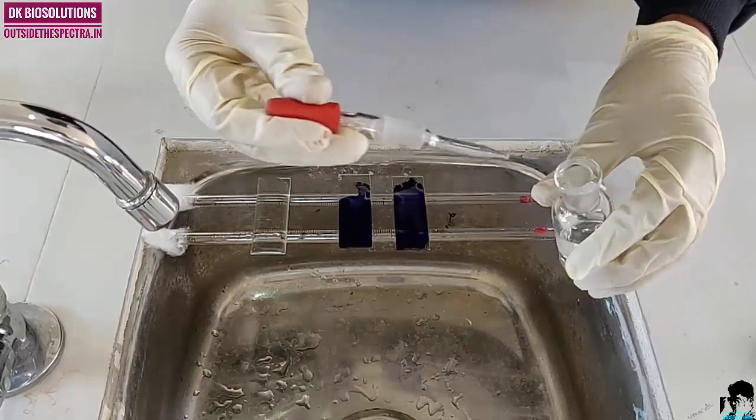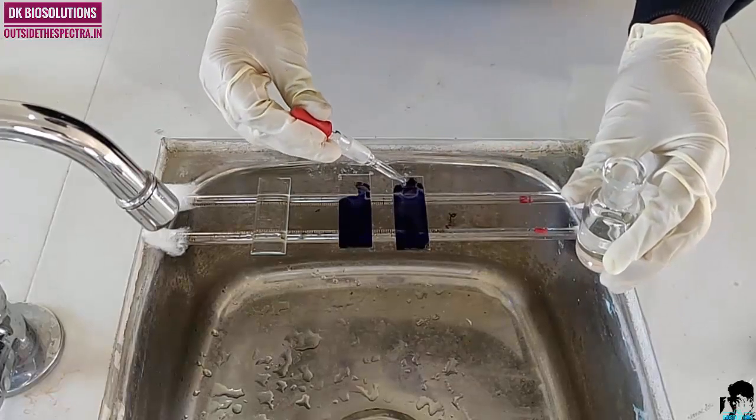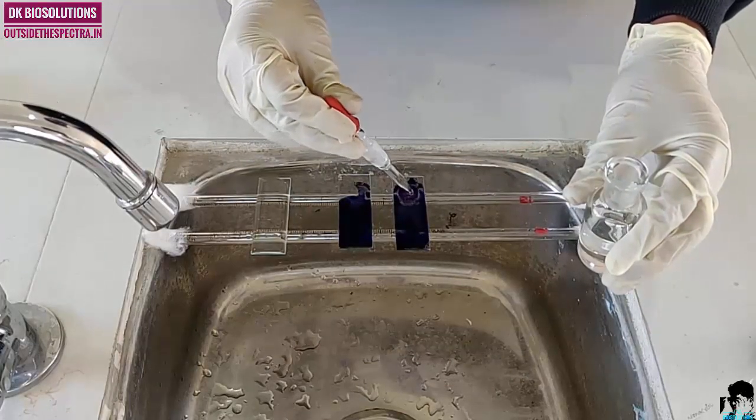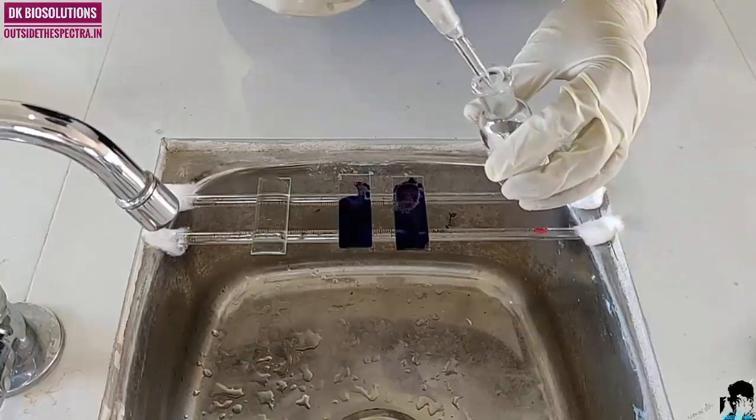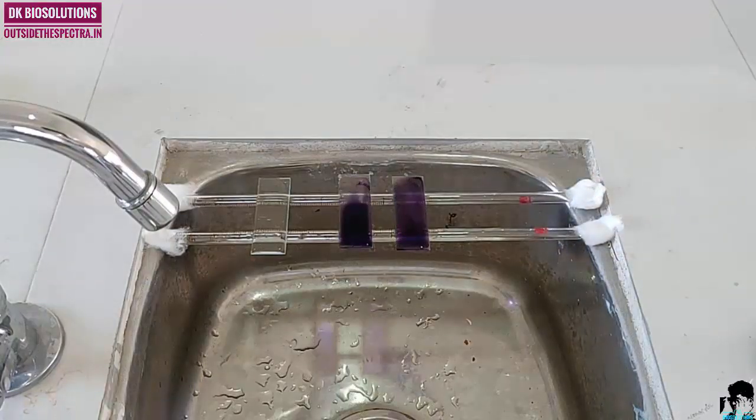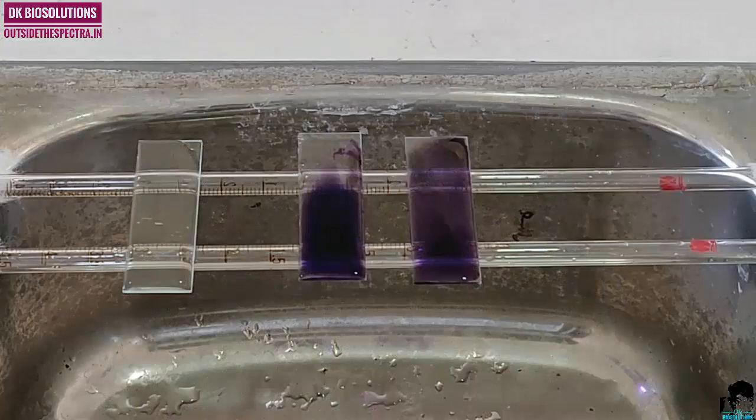After two minutes, add double amount of distilled water or Leishman buffer over the film carefully. You will observe golden scum on slide after adding Leishman buffer. Now, we have to wait for eight to ten minutes.